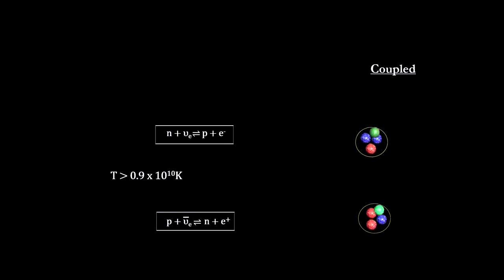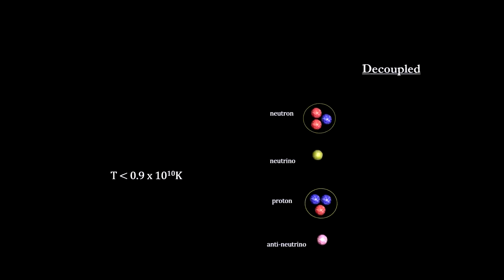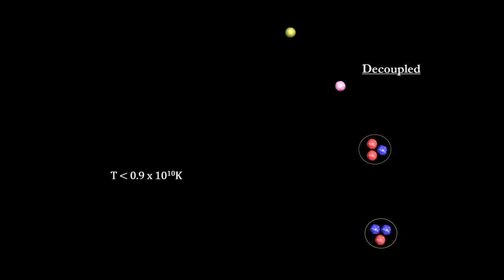And two, while the neutrinos were coupled to the protons and neutrons, they could not travel far. But once decoupled, they were free to travel across the universe, like photons did at their decoupling.